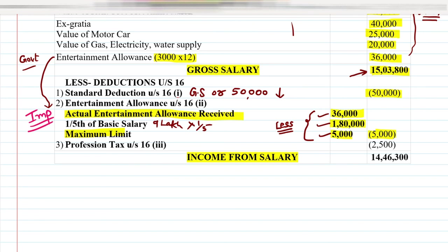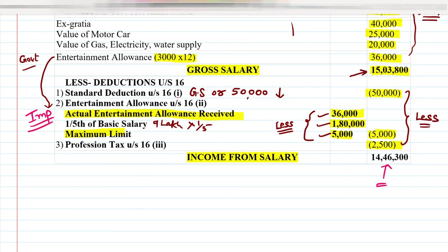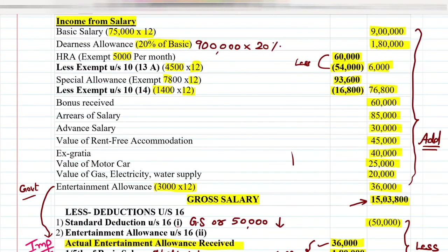Then we deduct profession tax directly as well. So: 15,38,800 minus 50,000 (standard deduction) minus 5,000 (entertainment allowance deduction) minus 2,500 (profession tax) gives us the final income from salary. The key difference between government and private employees is that a government employee gets the deduction for entertainment allowance. For a private employee, entertainment allowance is added to gross salary only - it does not appear as a deduction.